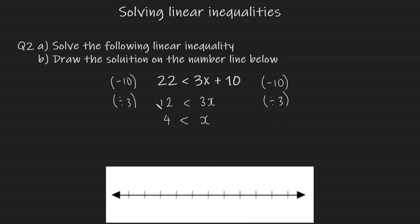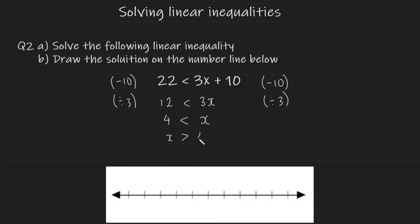To make drawing the inequality simple, it's better to have the variable on the left-hand side so we can use the inequality symbol as an indication of which way the arrow goes. The solution is to flip everything around: x moves from the right to the left, the less-than symbol becomes a greater-than symbol, and 4 moves from the left to the right. You are allowed to do this, and then you can draw the solution on the number line as before.